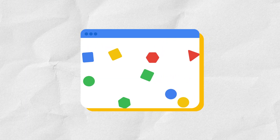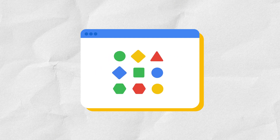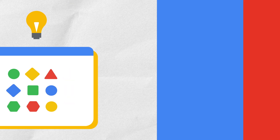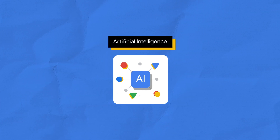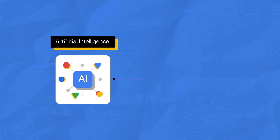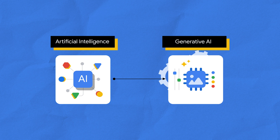AI, or artificial intelligence, is a field of computer science that focuses on making machines capable of performing cognitive tasks that would usually require human intelligence. Historically, AI was used to understand and recommend information. Now, generative AI can also help us create brand new content.